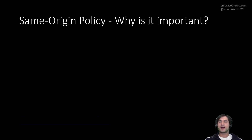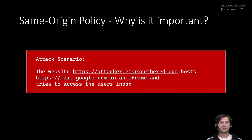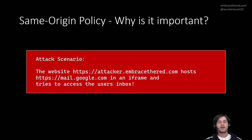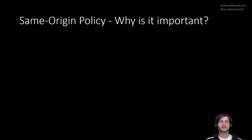Why is this important? Consider this attack scenario: you have a website called attacker.embracetheread.com. You visit that website as a user — maybe you clicked a link or were browsing Facebook and ended up there. That website loads Gmail into an iframe, which is an HTML tag that allows you to embed another web page. This would mean the attacker page could run code to access your inbox — and this is exactly what the Same Origin Policy prevents.